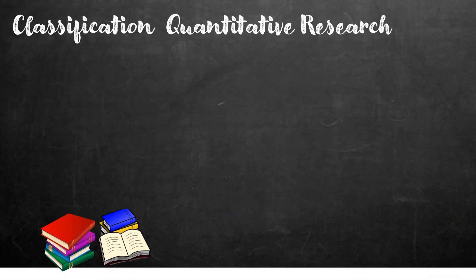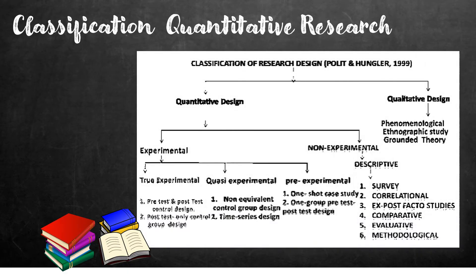Quantitative research designs are generally classified as experimental and non-experimental, as the following matrix shows. In the diagram, it is divided into two: we have the quantitative design and the qualitative research design. However, in this lesson, we'll be focusing on the quantitative design.